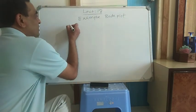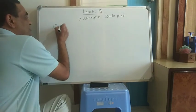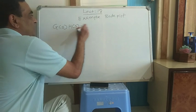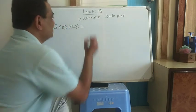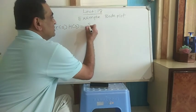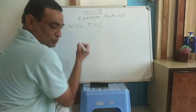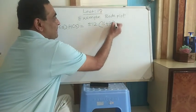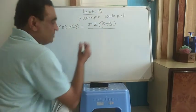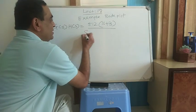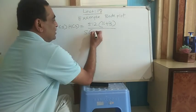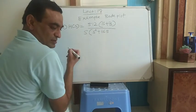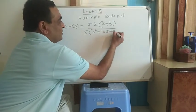I am going to take one open loop system. The open loop transfer function G(s)H(s) is: 512 times (s plus 3), divided by s into (s squared plus 16s plus 256).